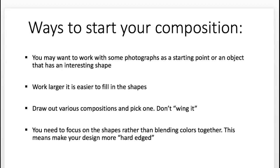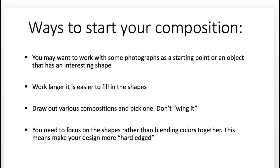How do you start a composition? You may want to work with some photographs you're interested in, or an object that has an interesting shape — like van Doesburg did with the cow. Working larger is easier to fill in the shapes with paint. I don't give you a specific size requirement, but if you try to work at 8 by 10 scale you're going to be frustrated — work larger. You need to draw various compositions and pick one; don't wing it. Work through ideas of eye movement and all the things we've been talking about.